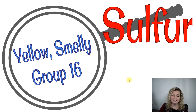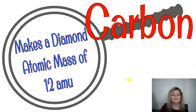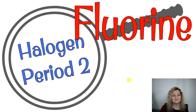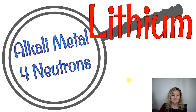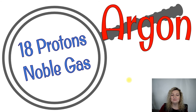Yellow and smelly in group 16 — that's definitely sulfur. It makes a diamond with an atomic mass of 12 amu — that's carbon. It's a halogen in period two — that's fluorine. A metalloid with 14 electrons — that's silicon. An alkali metal with four neutrons — that's lithium. 18 protons and it's a noble gas — that's argon.